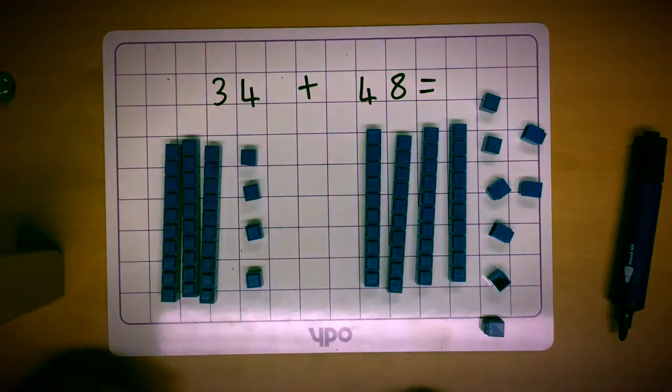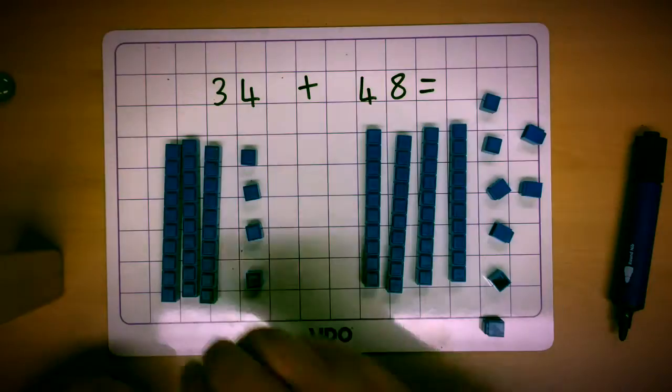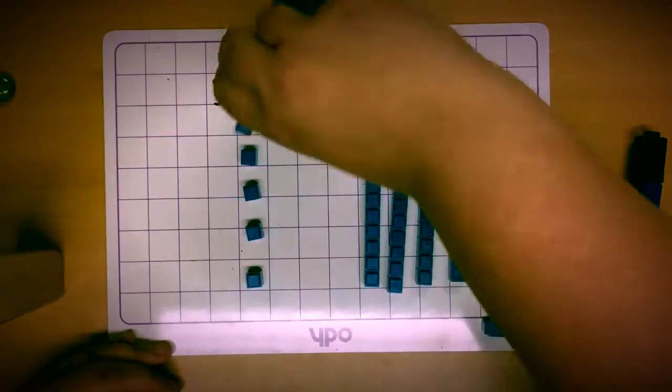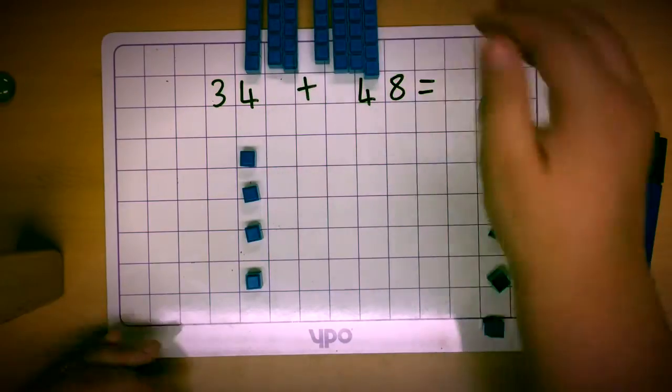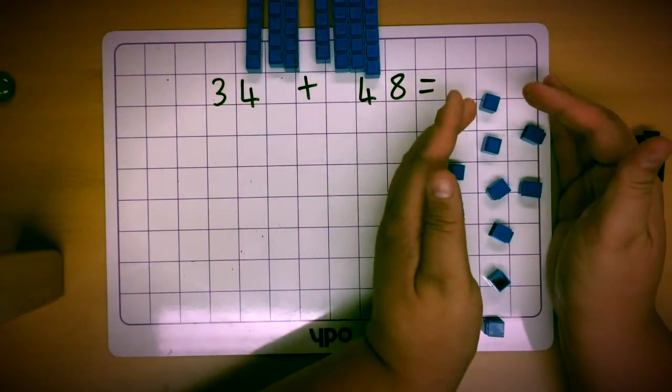Once they're happy that they have the numbers that they need, they're going to begin by adding the ten sticks together. When using the objects they can actually put all of the ten sticks in one pile and all of the little individual ones together.